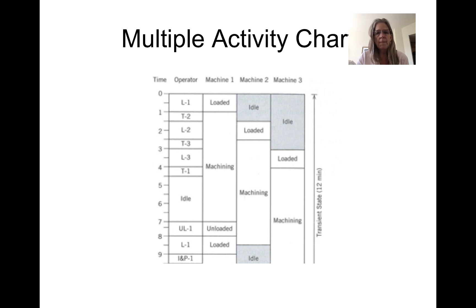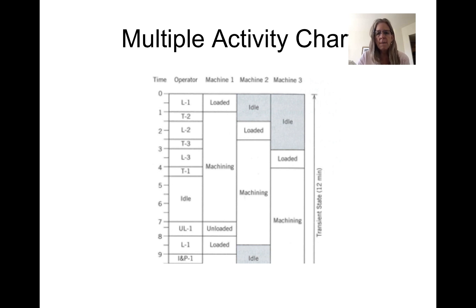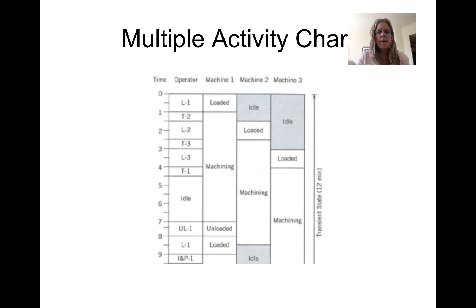A multiple activity chart — you may remember doing this in IME 223 — has time on the vertical axis and columns for the operator and various machines, showing how an operator might be running three machines simultaneously. It can track any kind of multiple activity happening at the same time, whether multiple operators or multiple machines, so you can see the load and idle activity.